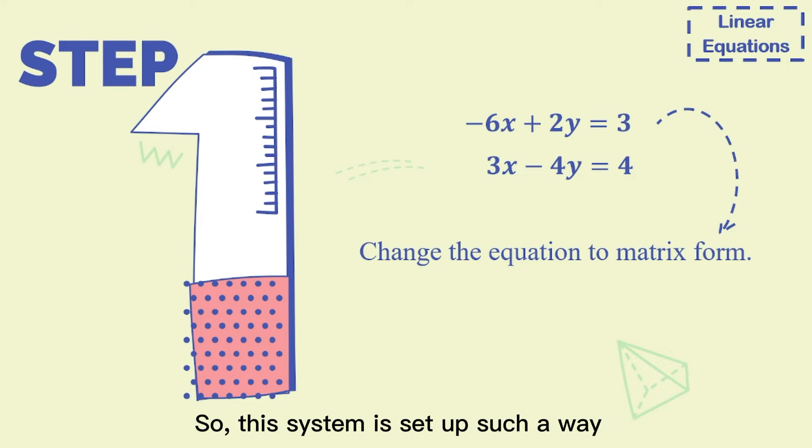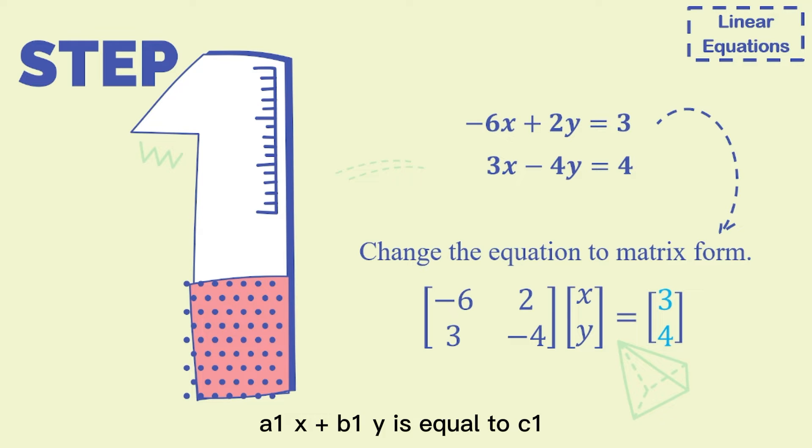So this system is set up such that a1x + b1y = c1, and a2x + b2y = c2.